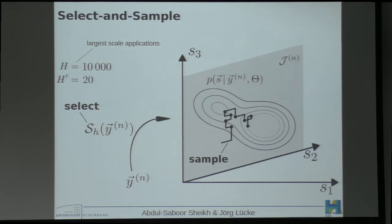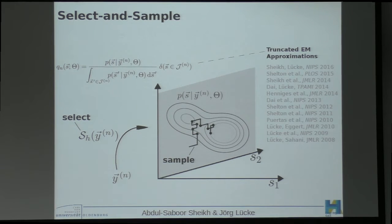If we compare with other approaches, we find that, first of all, our approximation scheme allows to capture correlations and multiple modes because it lies in the domain of so-called truncated EM approximations that we have applied since a couple of years now, and not in the domain, for instance, of variational approaches that would assume uncorrelated latent variables, which is often not realistic.